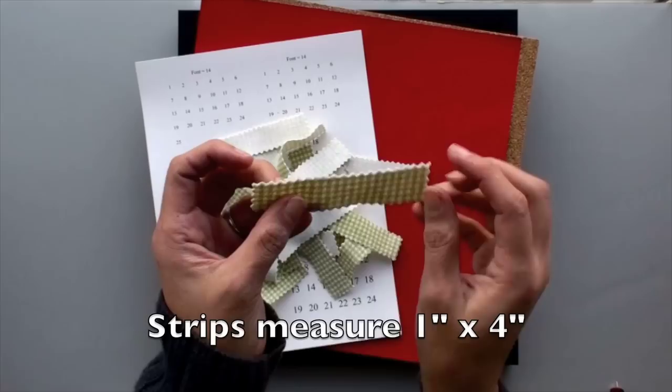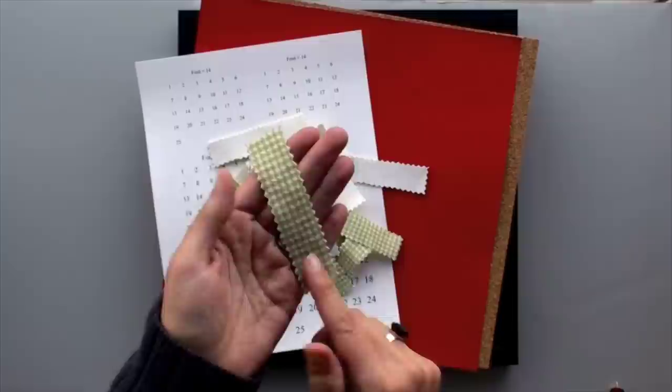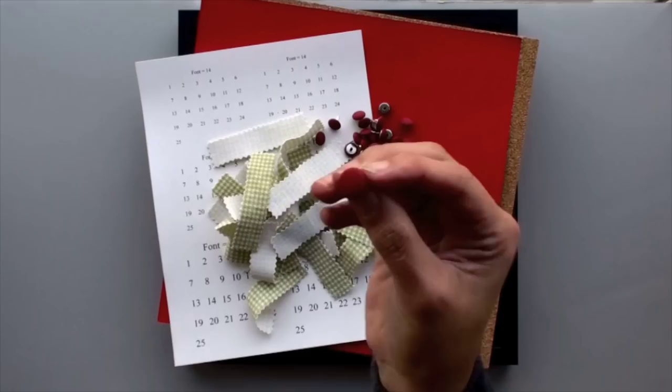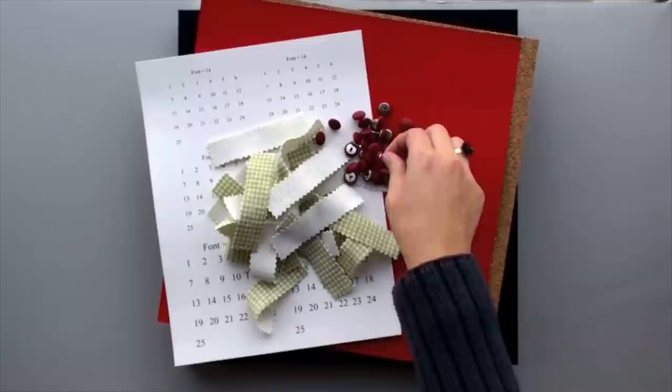You'll also need 25 strips measuring 1 inch by 4 inches. Then I went ahead and took scissors and just went all the way around the edges to give it a little decorative trim. Then 25 brads. I'm using kind of like a burgundy wine color corduroy and then obviously a little brad.